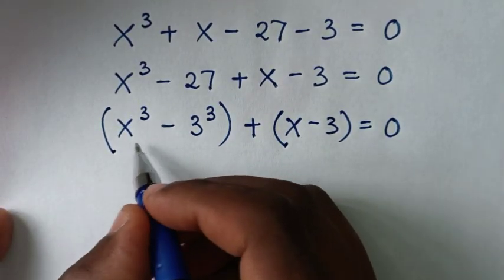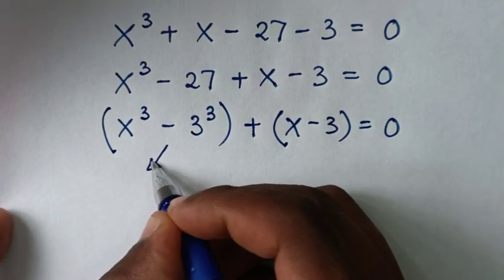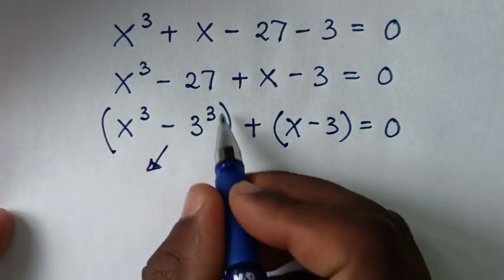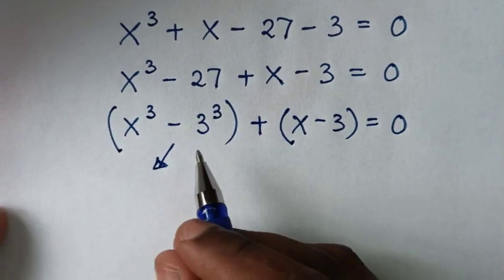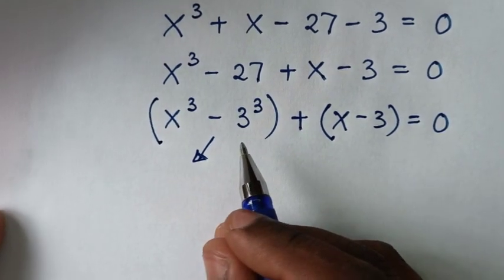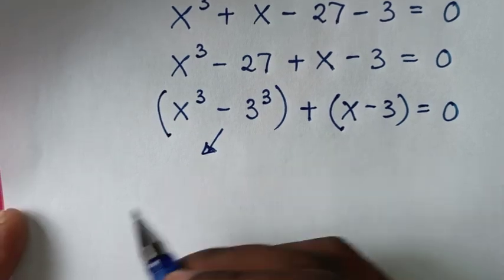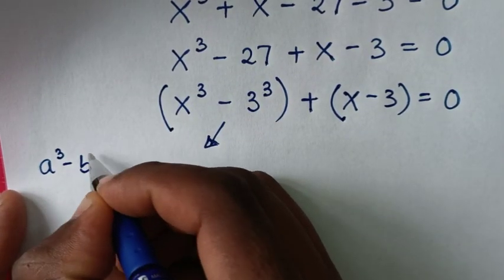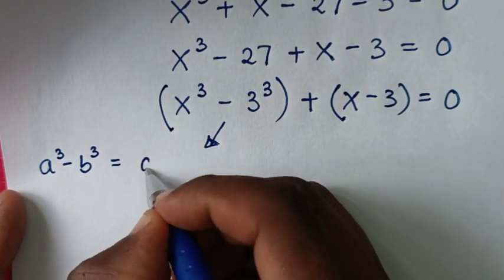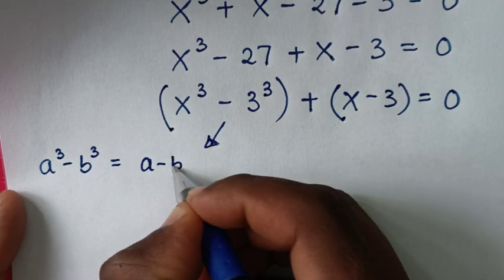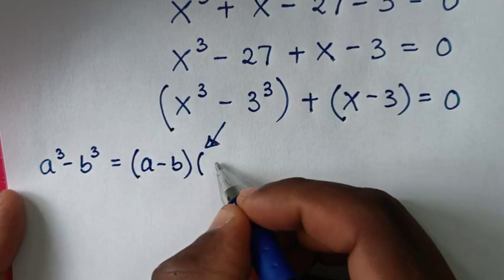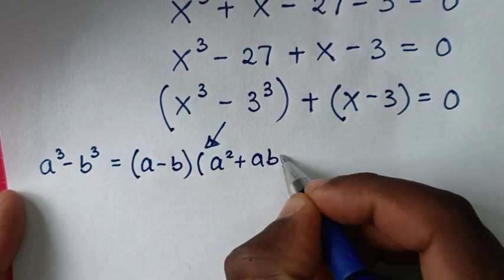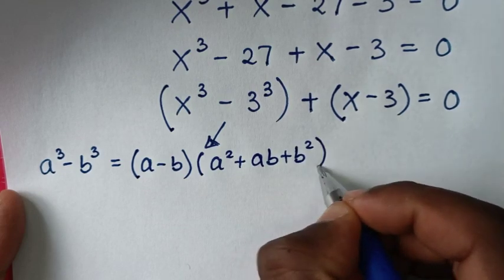From this part, x³ - 3³ is in the form of a difference of perfect cubes. We apply the formula a³ - b³ = (a - b)(a² + ab + b²).